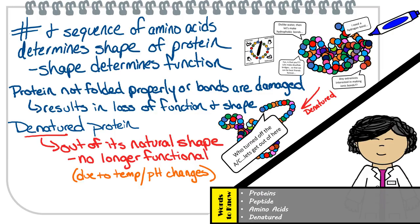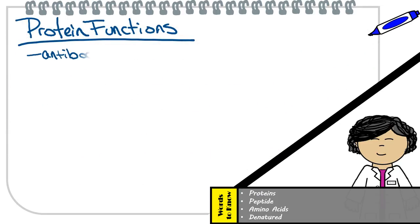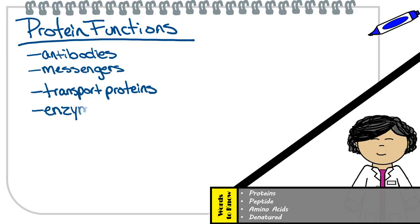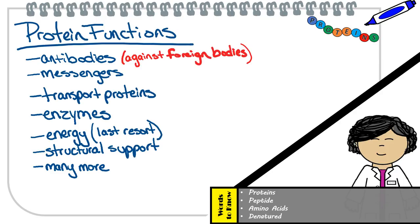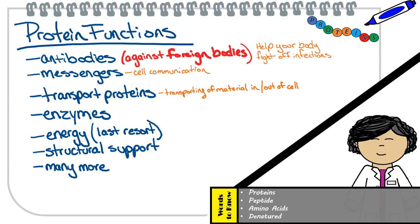Now that you have an idea of what monomers make up proteins and what they look like, let's talk about the different functions proteins may have. Proteins may act as antibodies, messengers, transport proteins, enzymes — they may even act as last resort energy, as well as structural support. Antibodies are not against your body; they're actually proteins that are against foreign bodies — they help your body fight against invaders such as bacteria and viruses. As for messenger and transport proteins, they play a role in cell communication and transporting of ions and molecules into and out of the cell.